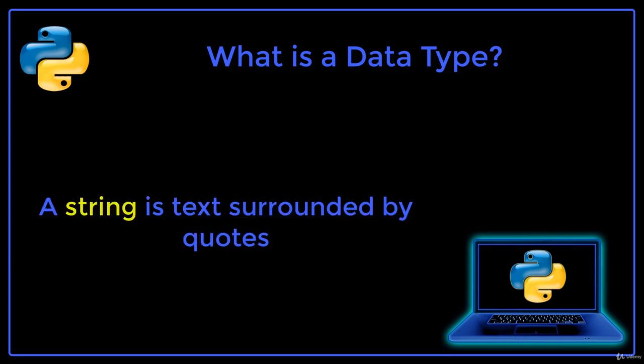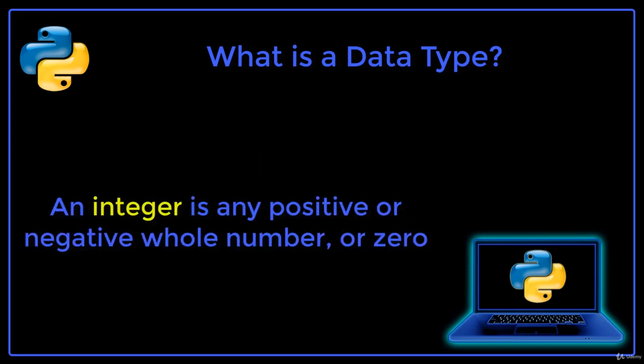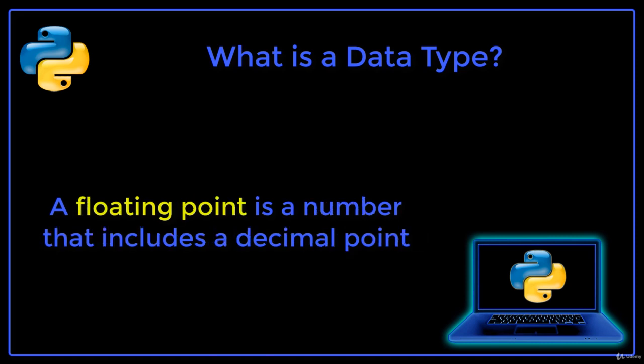A string is text surrounded by quotes. An integer is any positive or negative whole number, or zero. A floating point is a number that includes a decimal point.